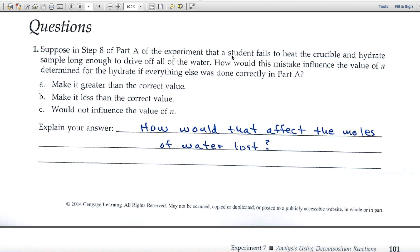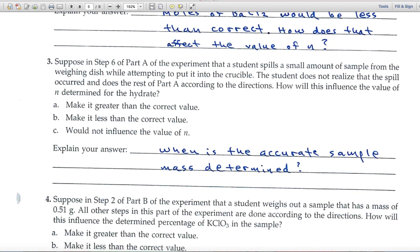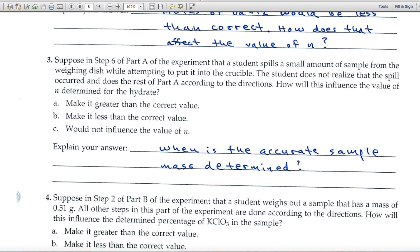Let's look at the questions at the end of the experiment. These are pretty hard and will take some thought, so I've tried to give you a clue for most of them. They're quite detailed, but I'll just read the clues for you. How would that affect the moles of water lost? Read number one, and as you weigh each of these responses A, B, and C, ask yourself how would the error indicated up here affect the moles of water lost? Number two, the tip is moles of barium chloride would be less than correct. How is that going to affect the value of N? Number three, when is the accurate sample mass determined? That'll help you.